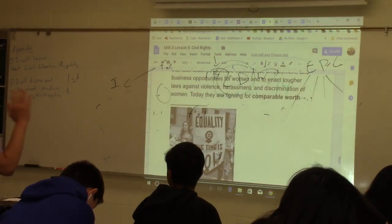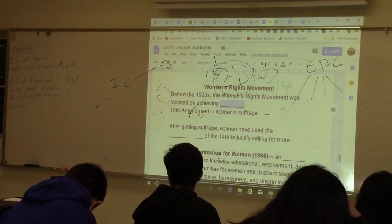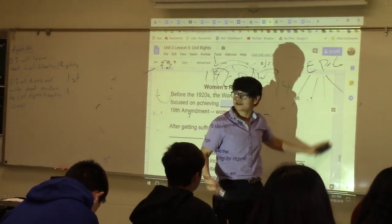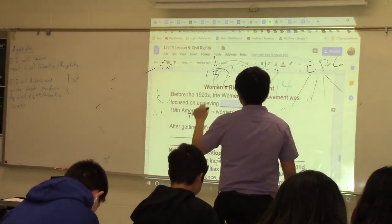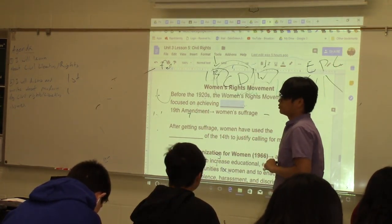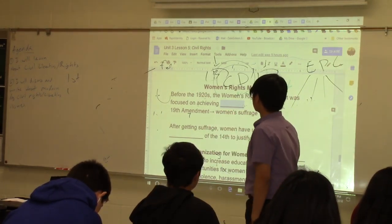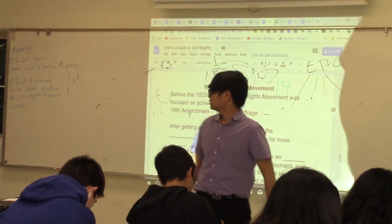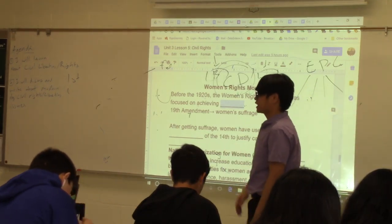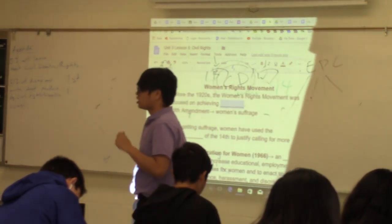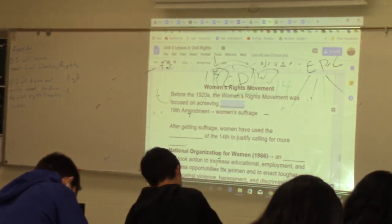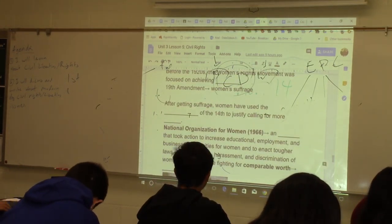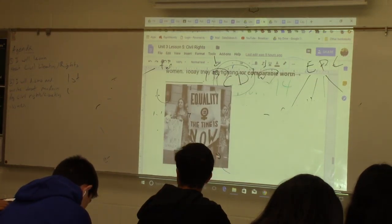Let's talk about the women's rights movement. What justifies women wanting equal rights constitutionally? The 14th Amendment's Equal Protection Clause. Before the 1920s, the women's rights movement was focused on one thing: suffrage — the right to vote. In 1920, they got the 19th Amendment which gave them the right to vote. After getting the right to vote, women used the Equal Protection Clause of the 14th Amendment to justify calling for more civil rights and equality.